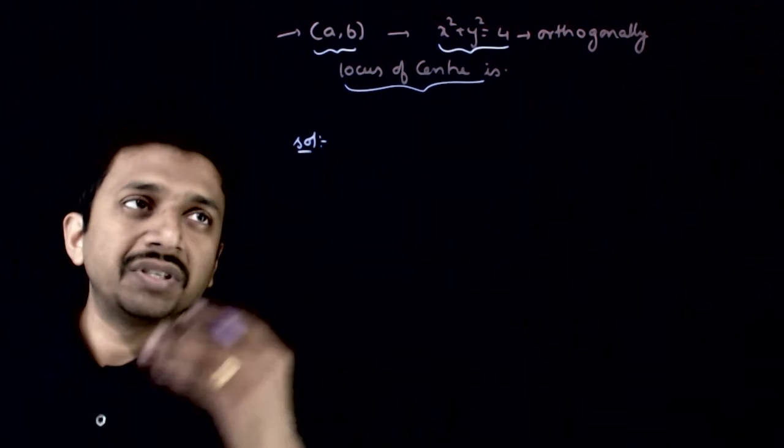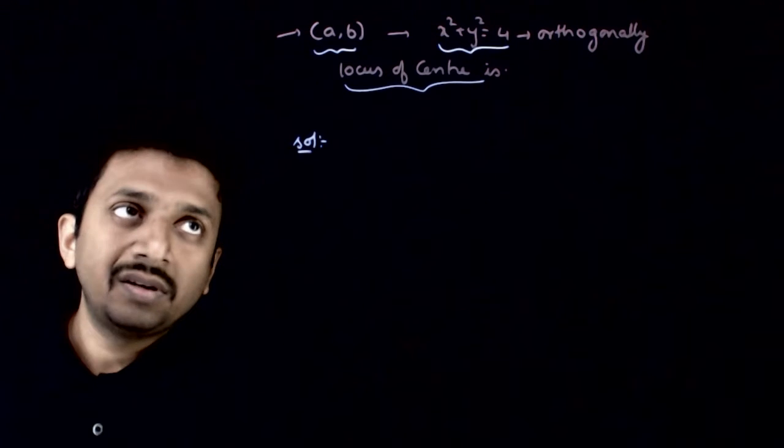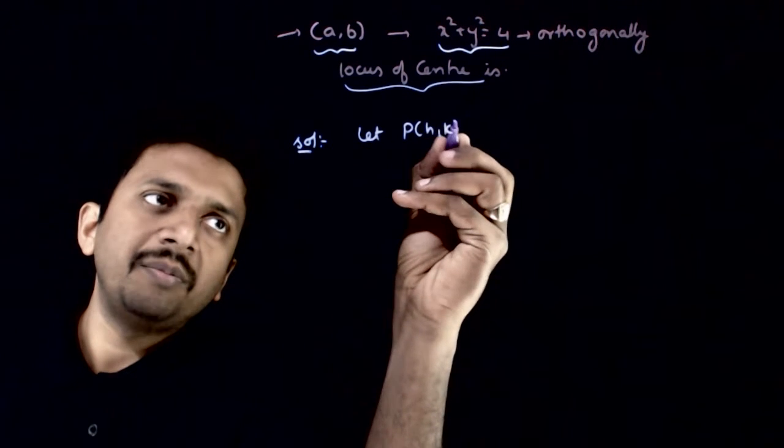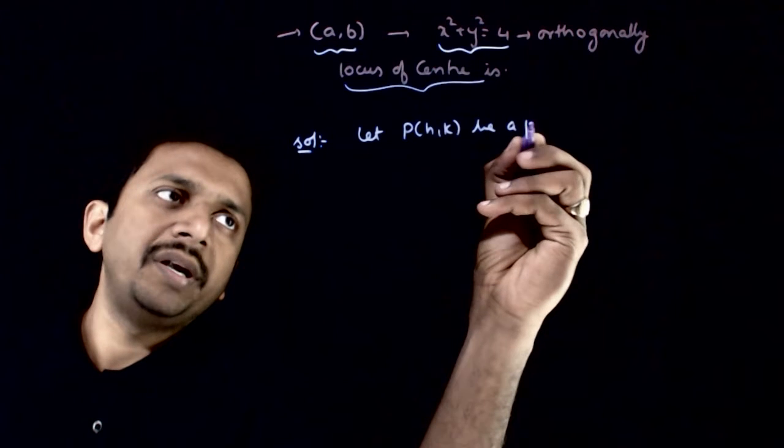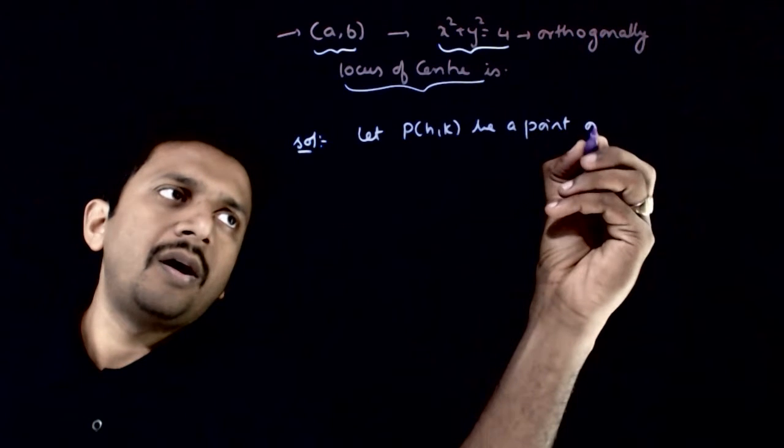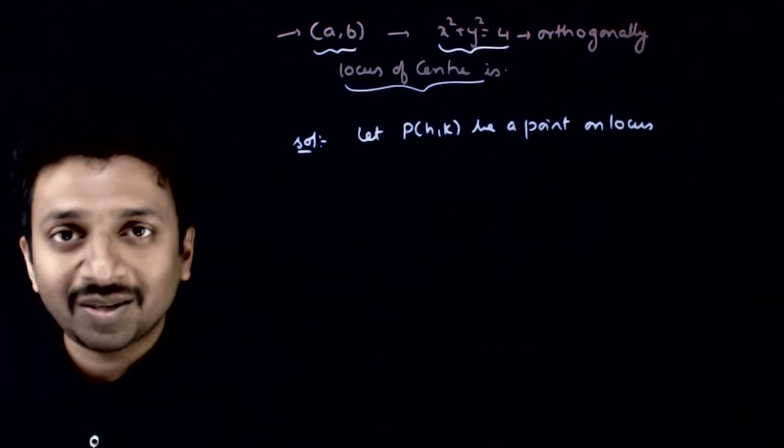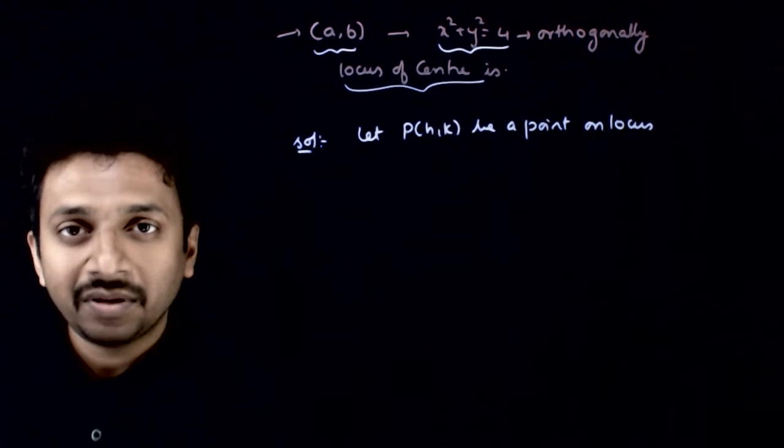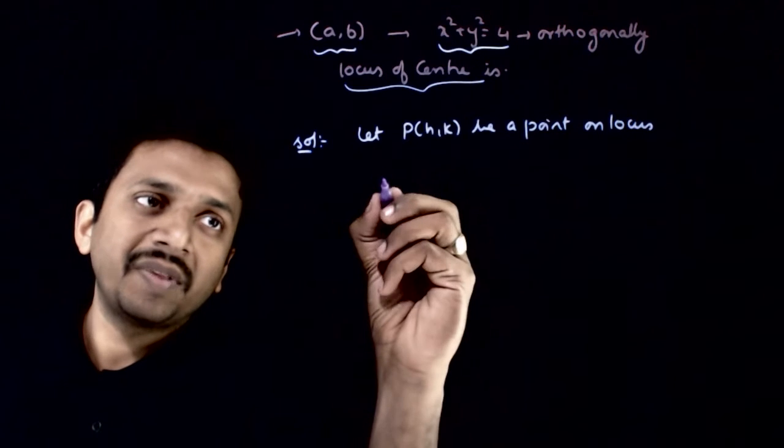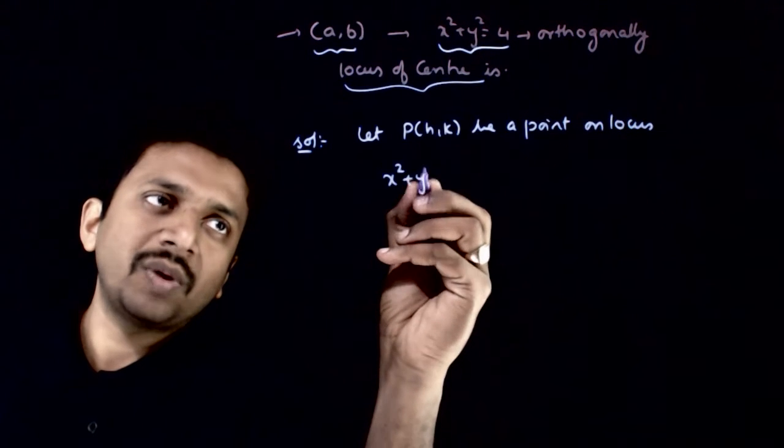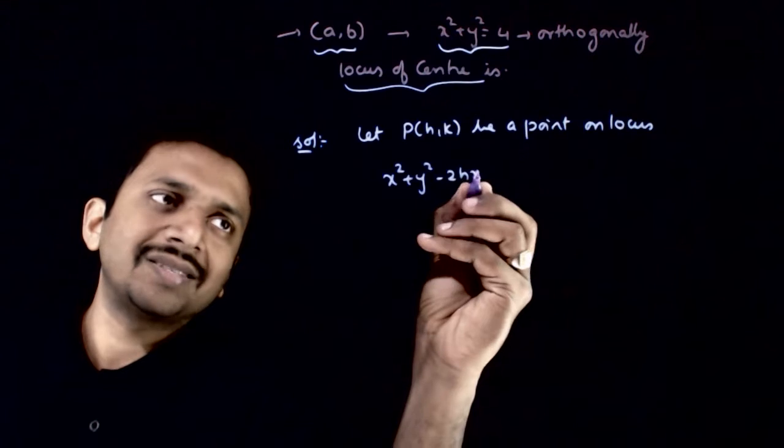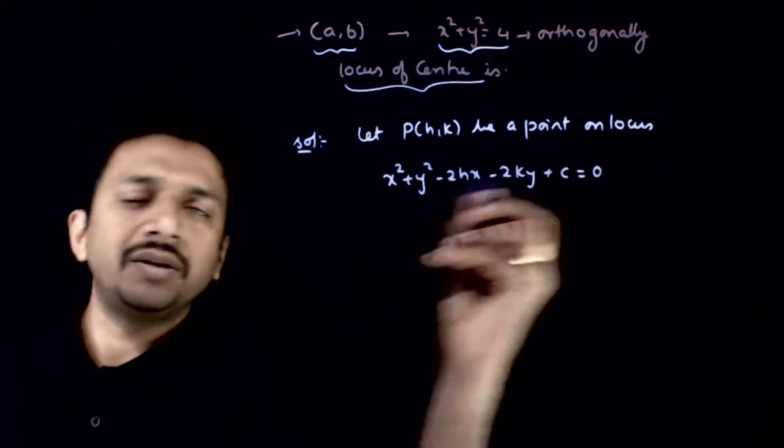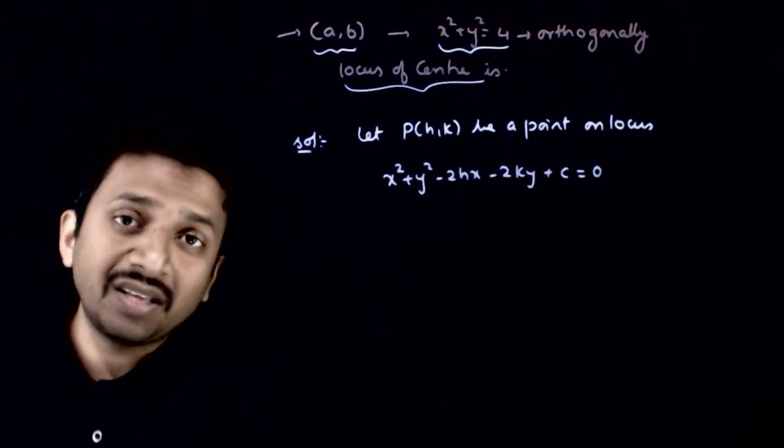Let us try to create equations corresponding to the given conditions. Let P(h,k) be a point on locus. If P(h,k) is a point on the locus, that means P(h,k) is the center of the circle. What is the equation of the circle? x² + y² - 2hx - 2ky + c = 0. This is the equation of circle.